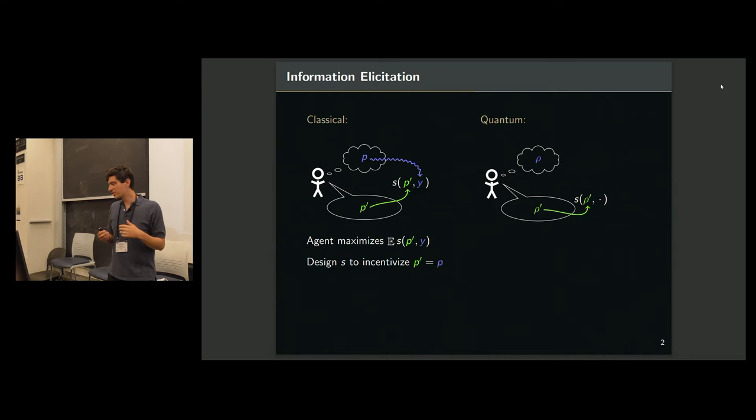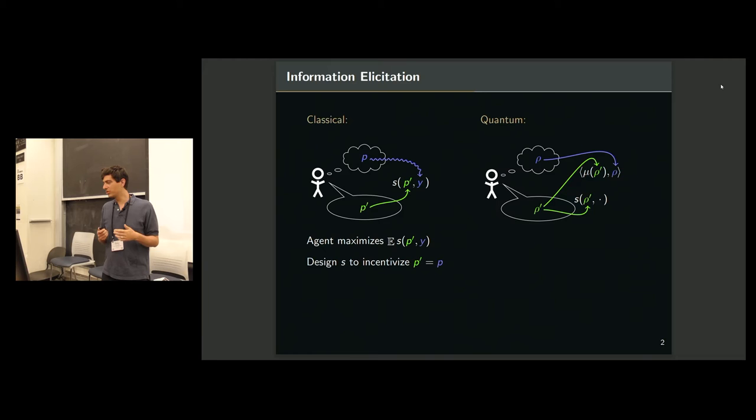What's interesting is when you sit down to design a contract now, they tell you some density matrix which describes the mixed state, and you want a score that depends on the report and the outcome. But the outcome, you can't just draw an outcome from a quantum mixed state. You have to first choose a measurement, and the most general thing you could do is have the measurement mu depend on the report. So now you have this measurement mu, and I'm not telling you how that works. I barely know myself.